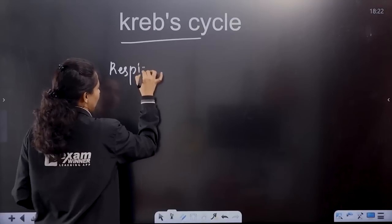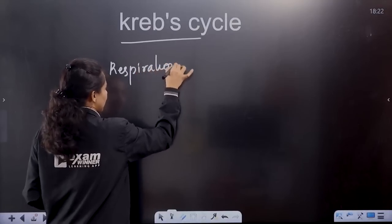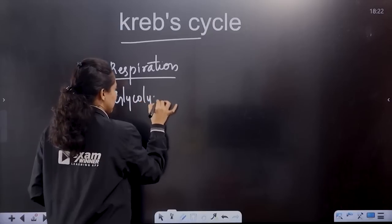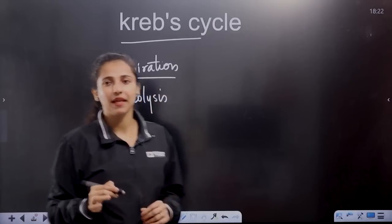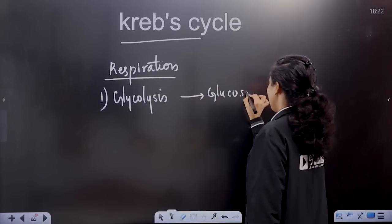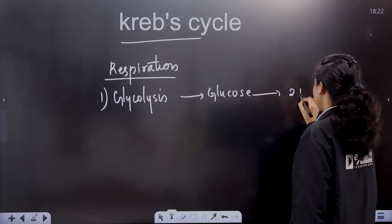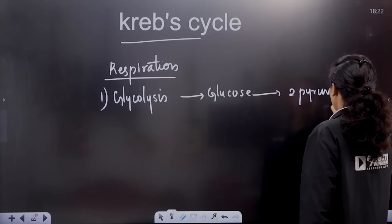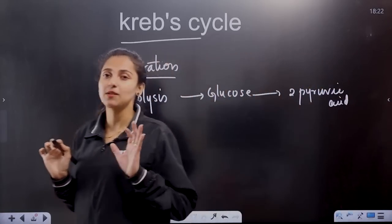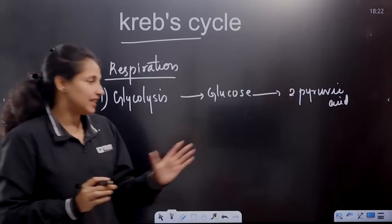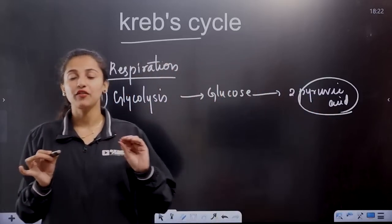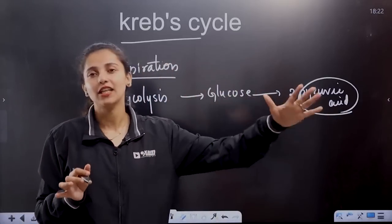We have two steps for aerobic respiration. The first step is Glycolysis. Glycolysis is an incomplete breakdown of glucose, producing two molecules of pyruvic acid. This is an incomplete process, and pyruvic acid is the end product.